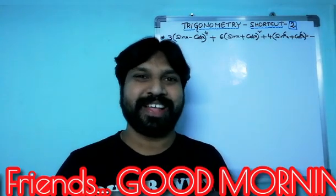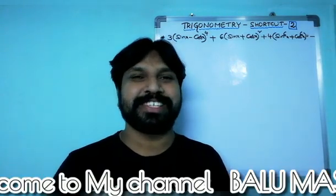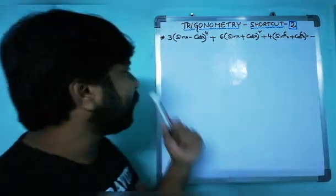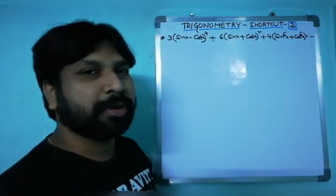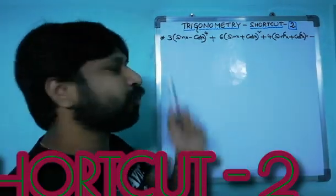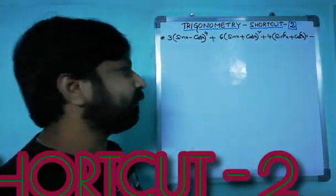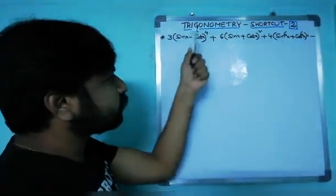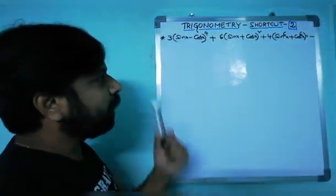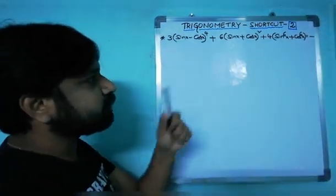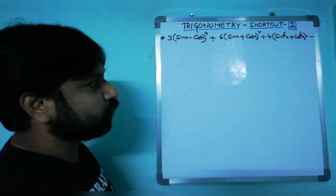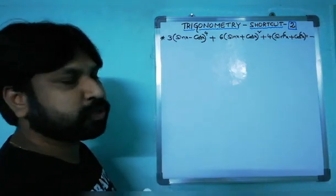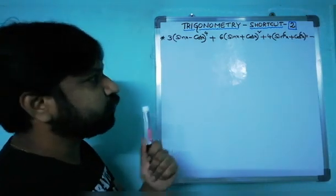Hi friends, good morning! Welcome to my channel Palu Master. Today I'm going to discuss shortcut number two on trigonometry. The question is: 3(sinx - cosx)⁴ + 6(sinx + cosx)² + 4(sin⁶x + cos⁶x) = ?